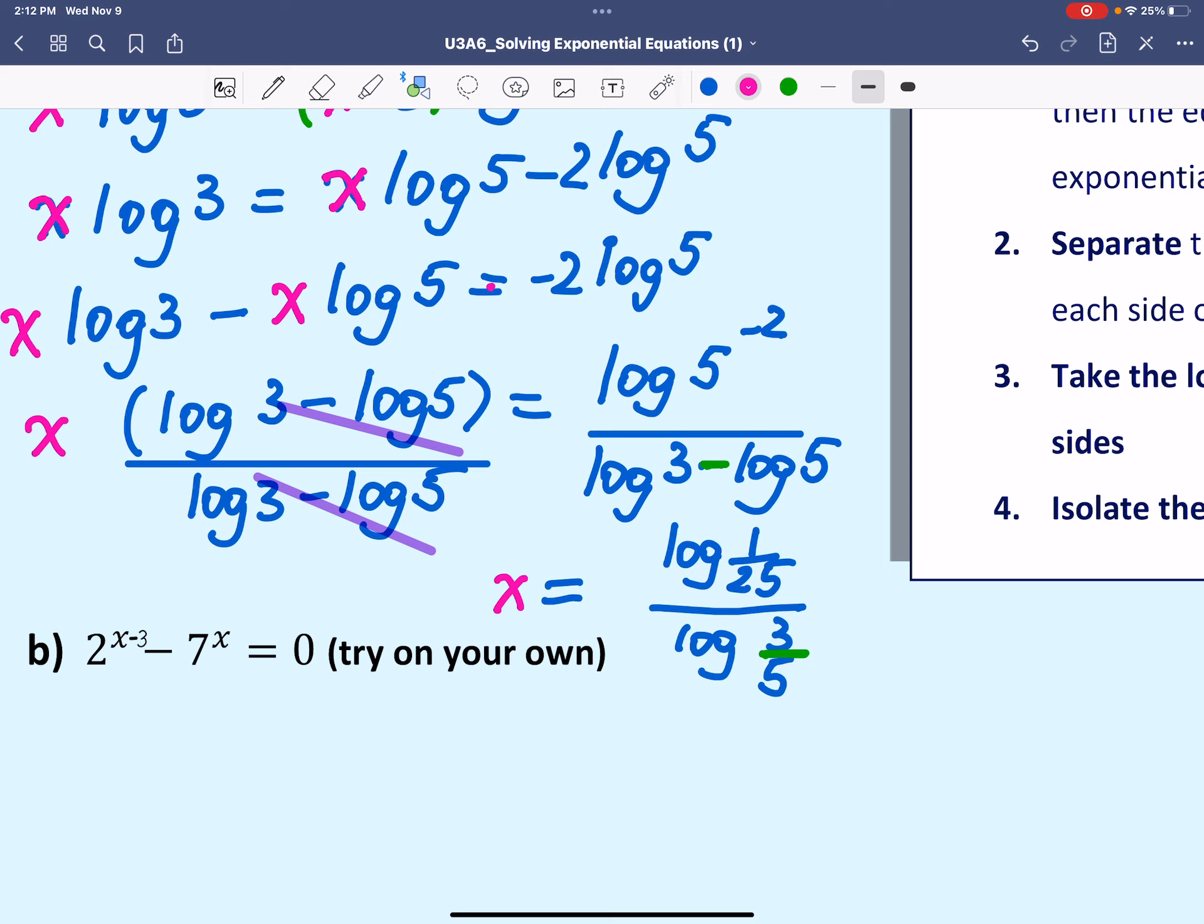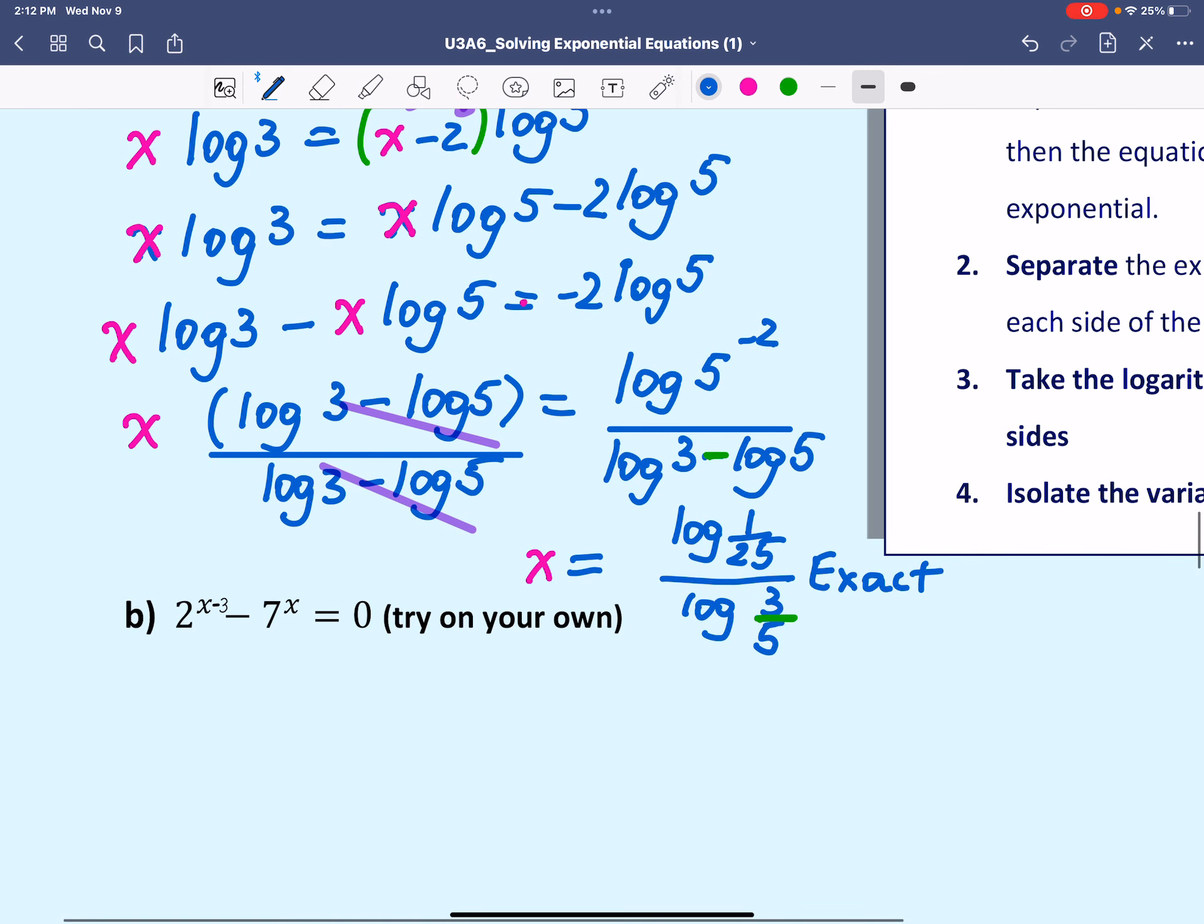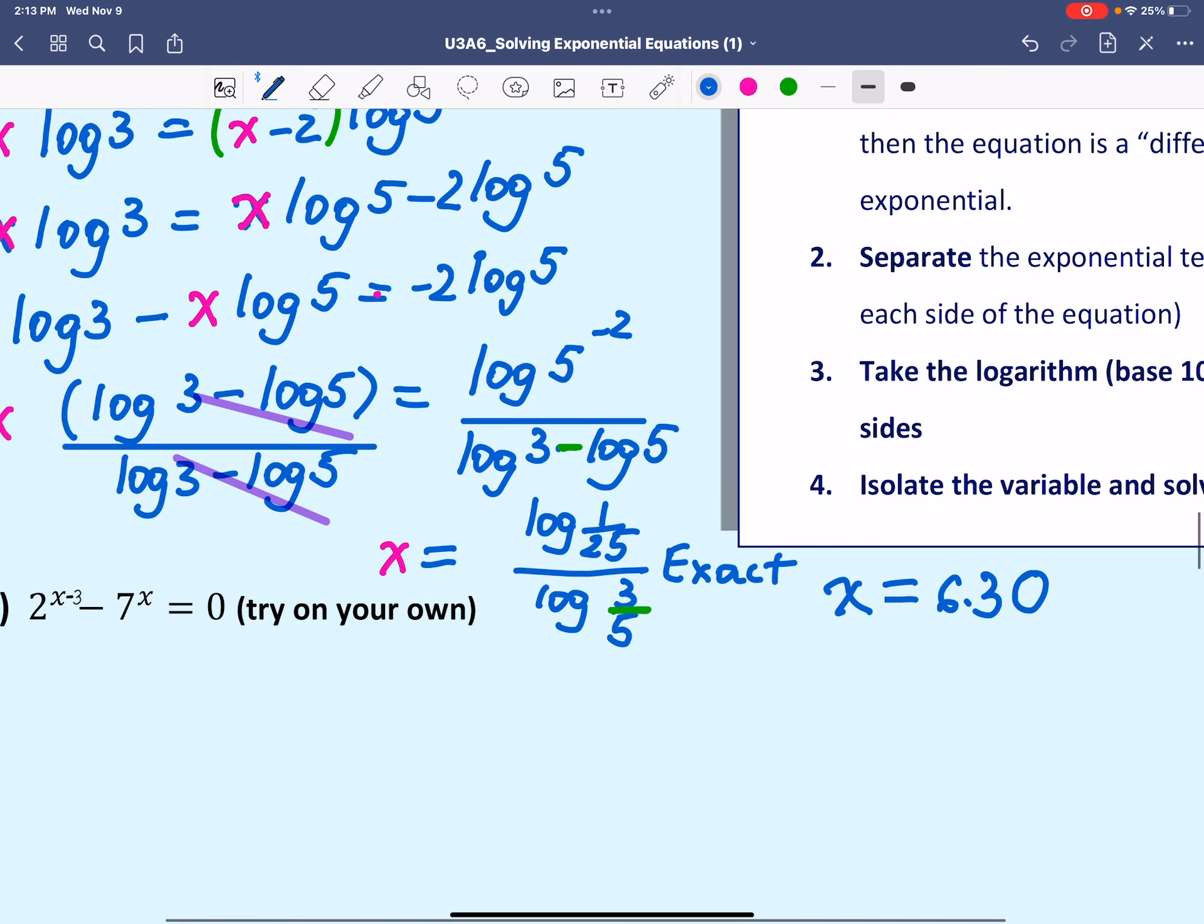This would be the exact answer in this case. If we want to find the approximate answer, we use the calculator to evaluate this log expression. Log of 1 over 25 divided by log of 3 over 5. That means we are dividing by another negative number. So the final answer in this case would be x equals 6.30. I would prefer that we round the answer to two decimal places when we solve exponential or log equations.